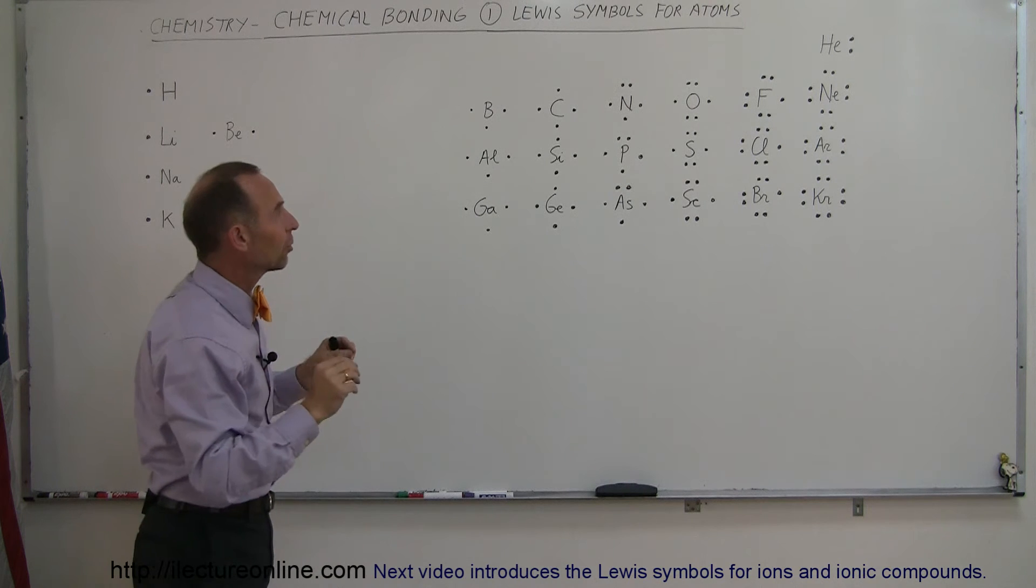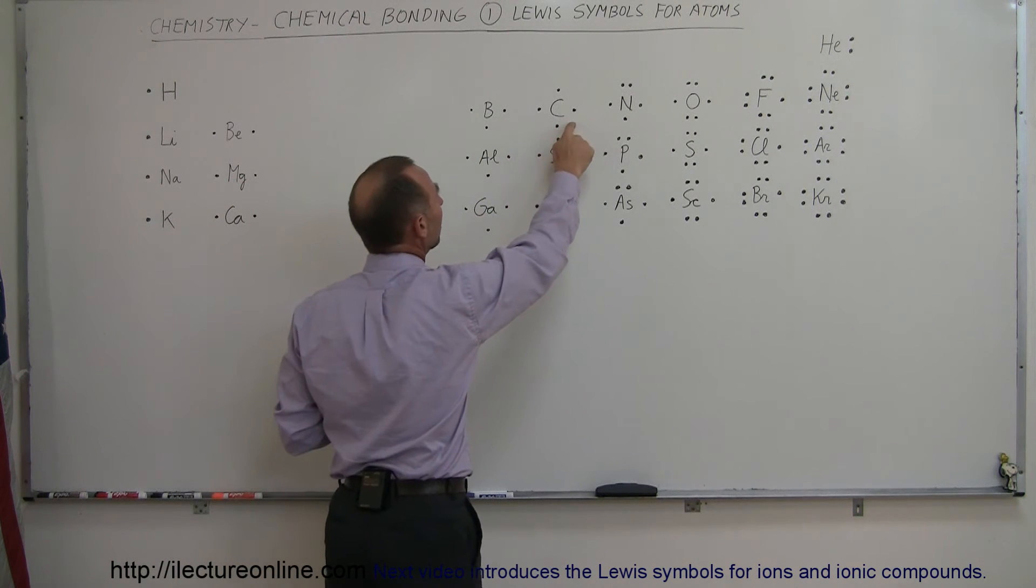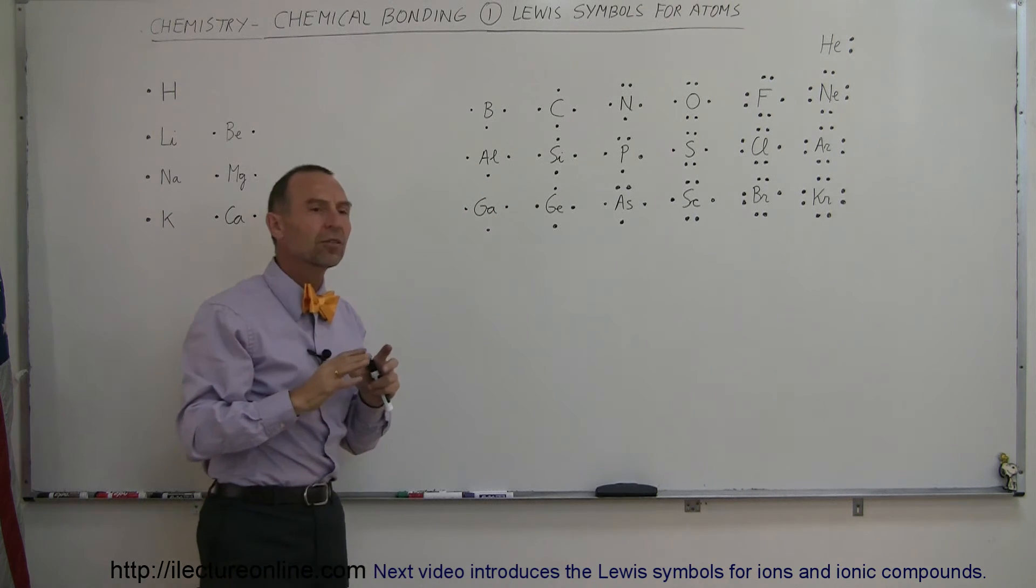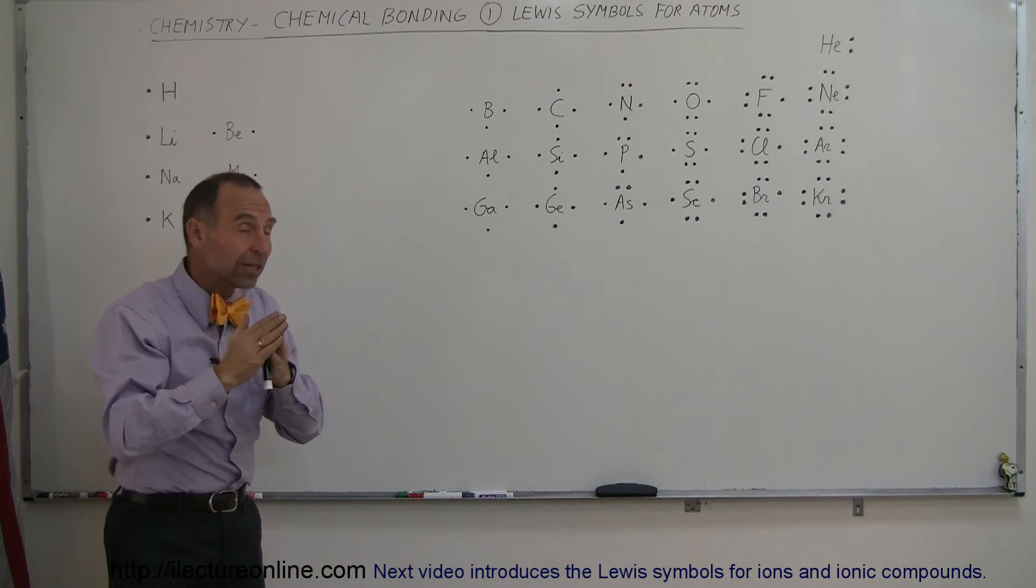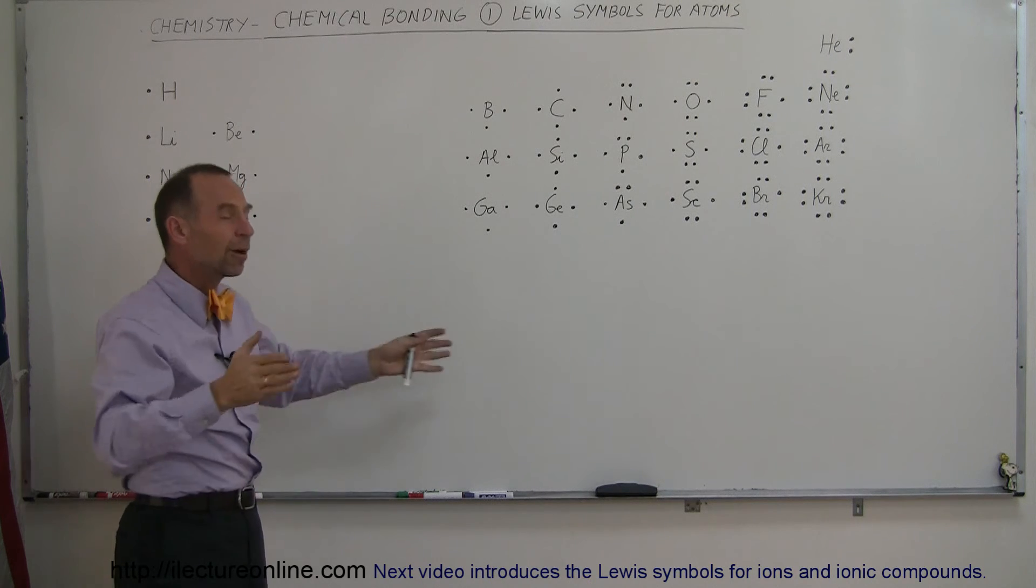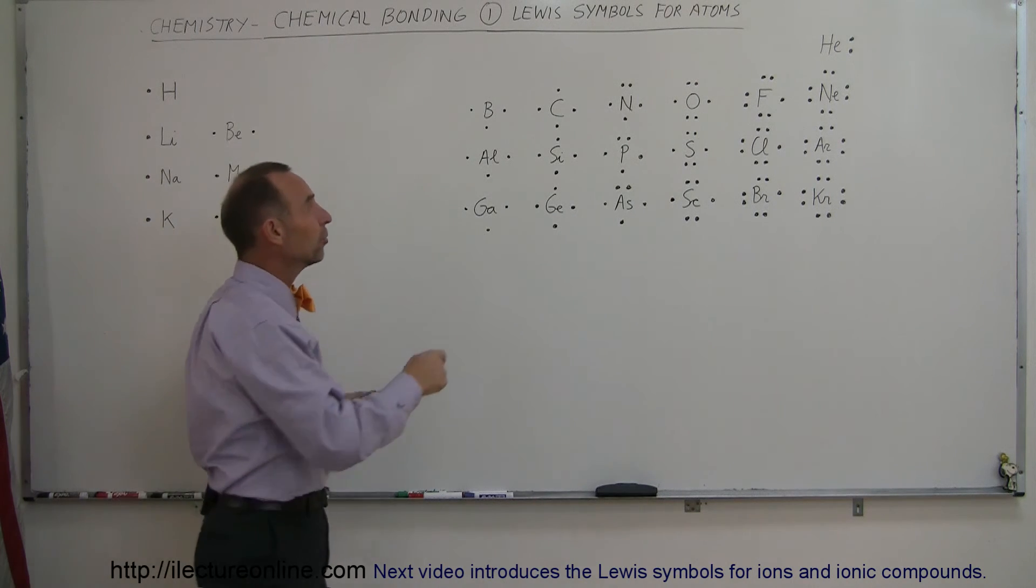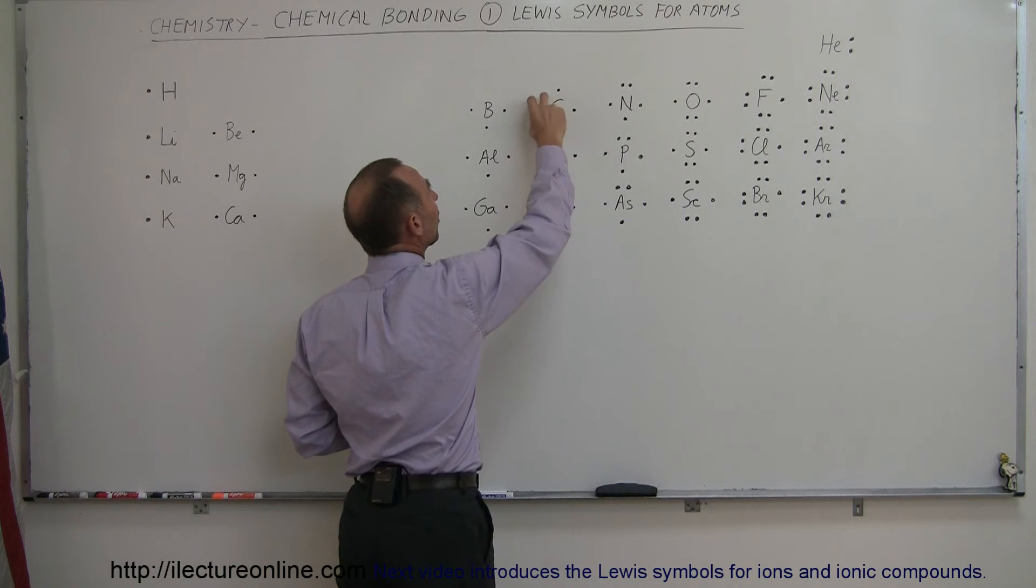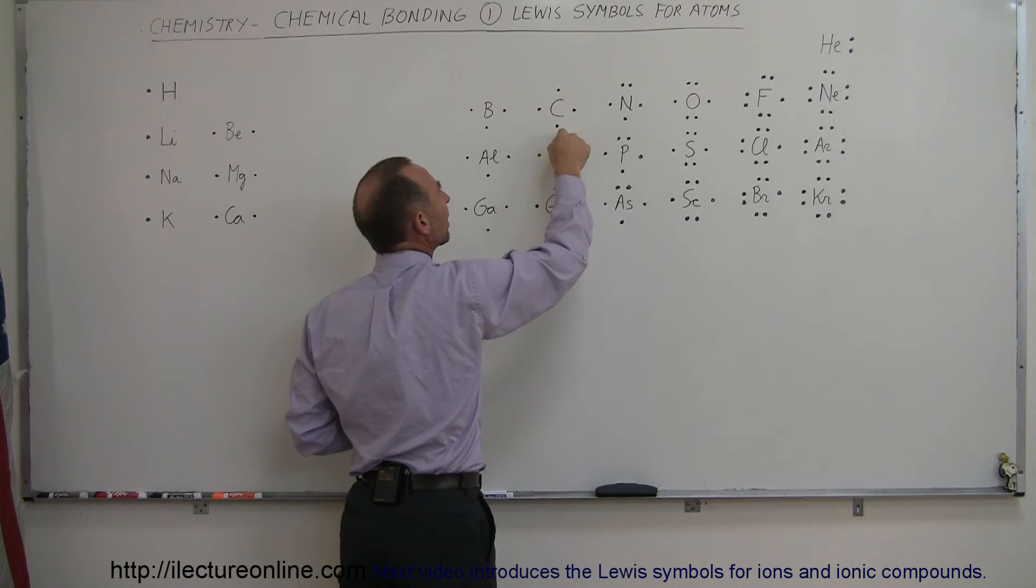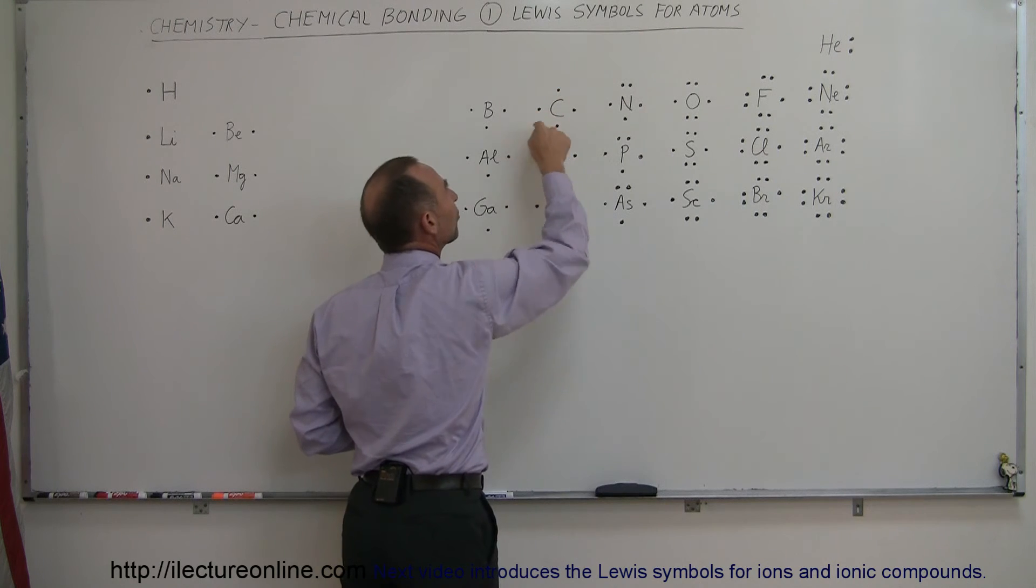Also notice how they're spaced out. When there's for example four with carbon, we show that they're spaced out as much as possible because electrons do not like to be close together, they repel each other. So we want to kind of give an indication that they're as far away from each other as possible. And also this indicates that since electrons like to be paired up, carbon has a possibility of making four separate bonds with these four electrons.